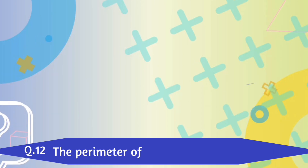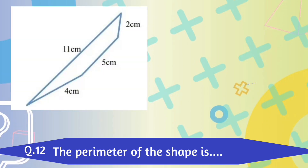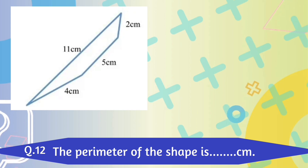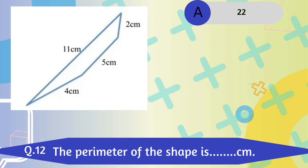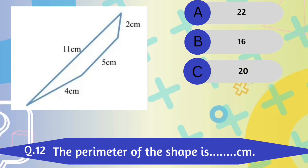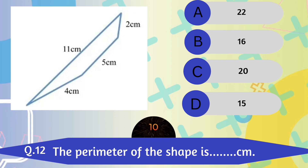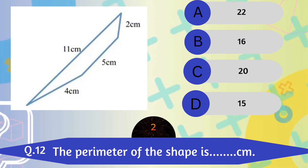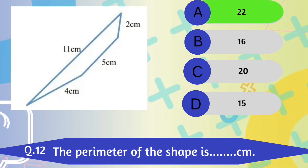Question number 12. The perimeter of the shape is dash cm. A. 22 centimeters. B. 16 centimeters. C. 20 centimeters. 22 centimeters is the correct answer.